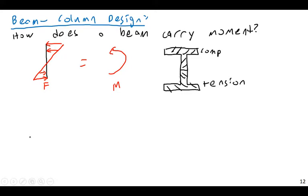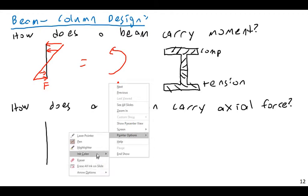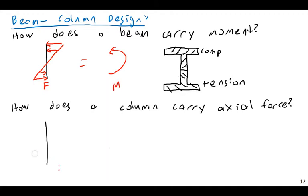If I look at a cross-section, say this is a W-shaped cross-section here, and assuming everything's nice and symmetric, the top of the beam would be in compression and the bottom of the beam would be in tension. Next, I need to ask, how does a column carry axial force? Well, like everything else, it's carrying it as a stress distribution.